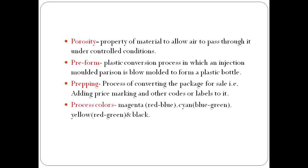Process colors are used in the food industry, packaging industry, and even in the newspaper industry. You may have heard of CMYK: Cyan, Magenta, Yellow, and Black. Magenta is a mix of red and blue; Cyan is obtained by mixing blue and green; Yellow is obtained by mixing red and green; and K is black. These four are the process colors.